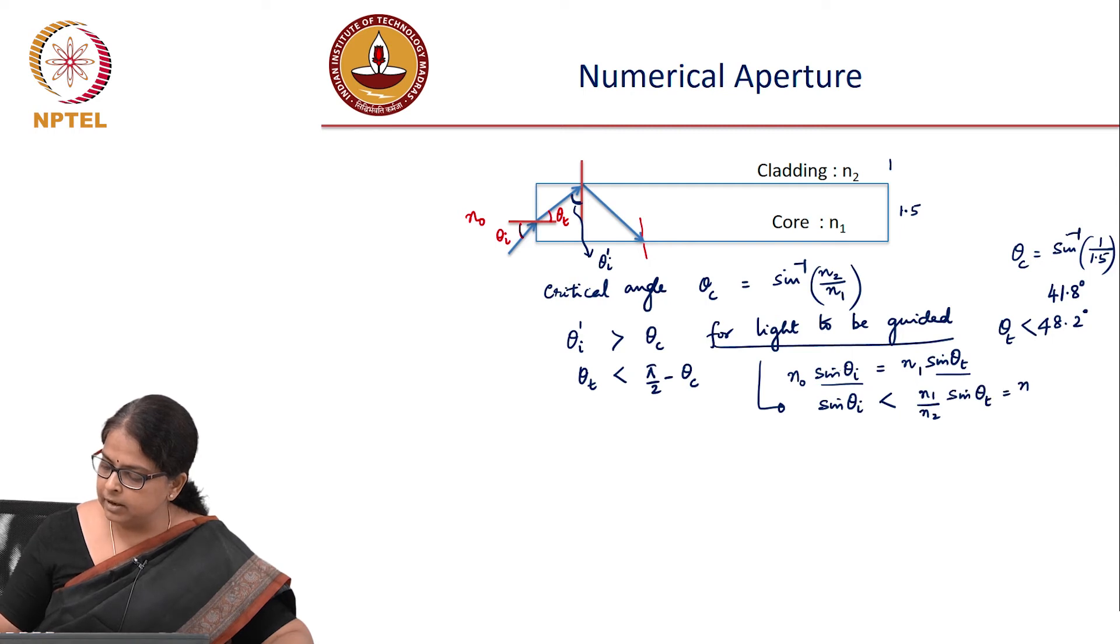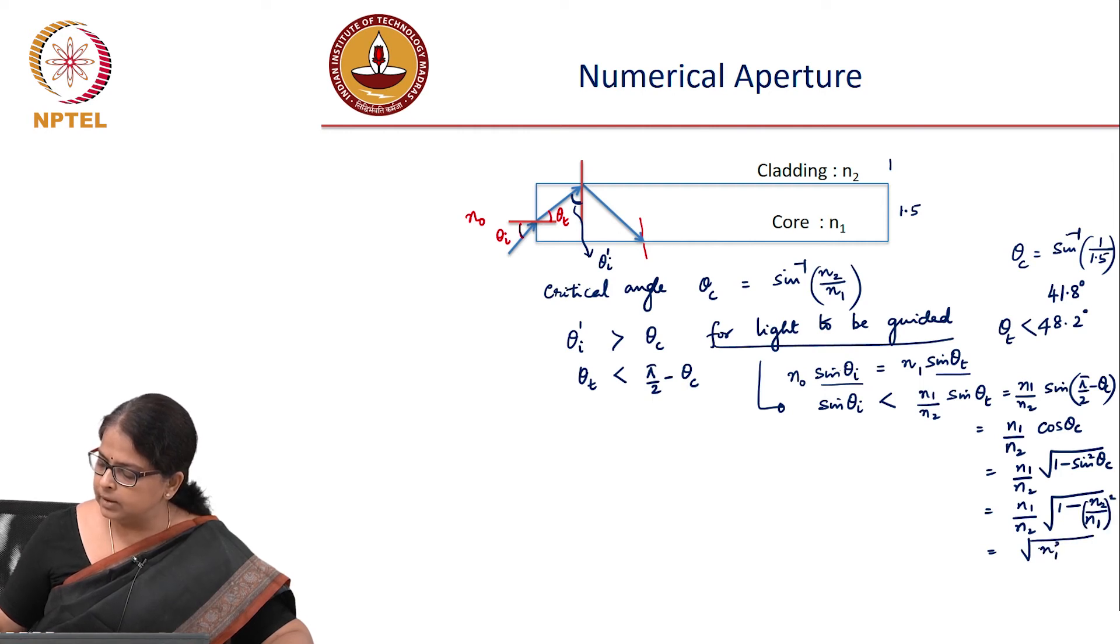Which is (n₁/n₀) sin(90° - θc), which is (n₁/n₀) cos θc, which equals (n₁/n₀) √(1 - sin² θc). This becomes (n₁/n₀)√(1 - (n₂/n₁)²). Under the square root this gives n₁² minus...